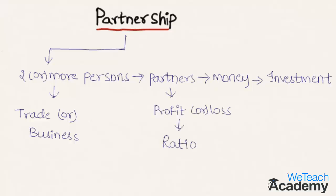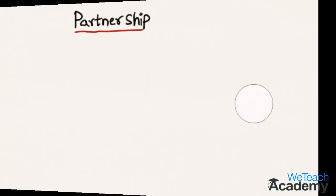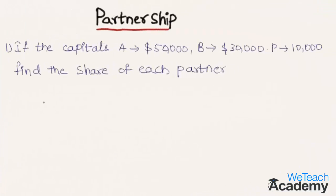Let us solve an example. If the capital of A is $50,000 and B is $30,000, and the profit made by them is $10,000, we have to find the share of each partner.